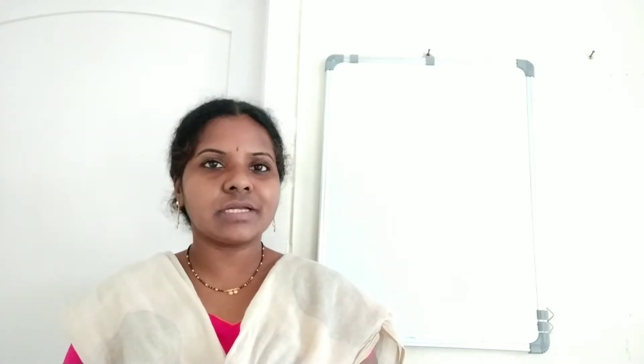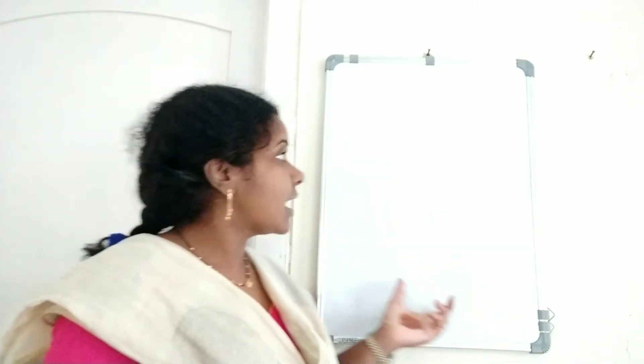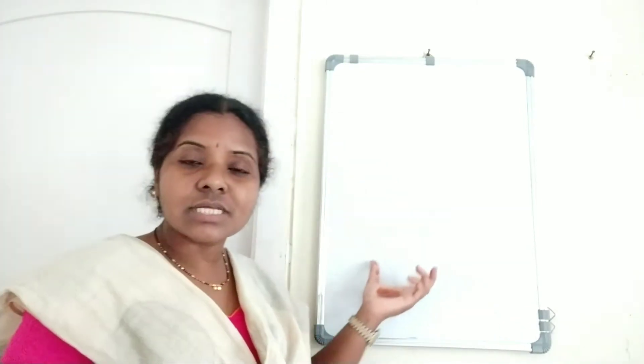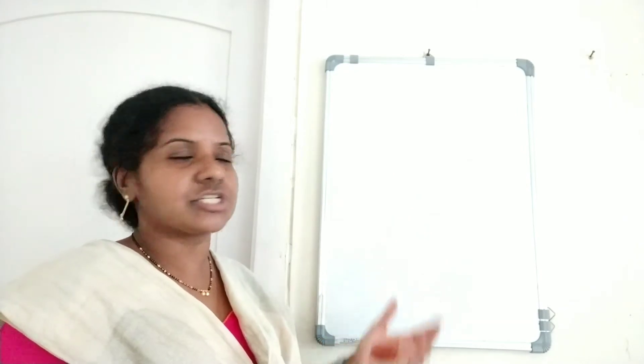Hello everyone, welcome back to my channel. Today our topic is conjugate surds. What are conjugate surds? Suppose the sum and product of two mixed surds is a rational number. Then those surds are said to be conjugate to each other.